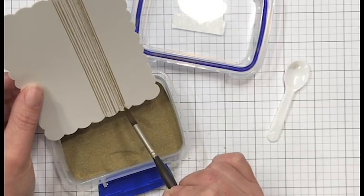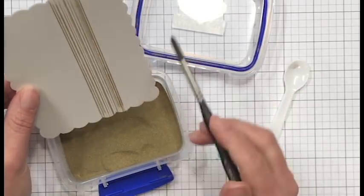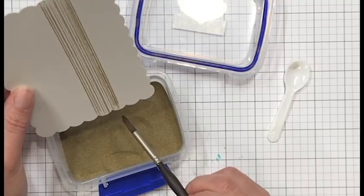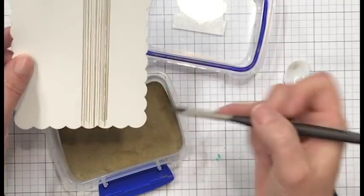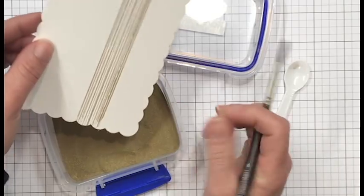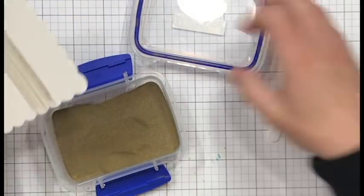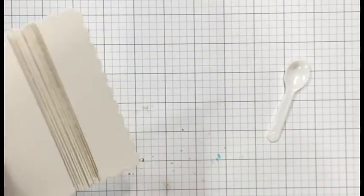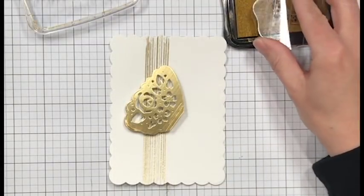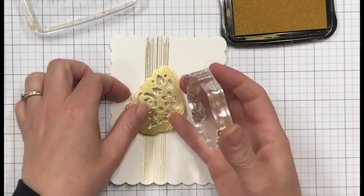I do have my heat gun heating up while I'm doing this because I want to make sure that it's nice and hot. I'm going to try to minimize as much warping as I possibly can because this panel isn't going to be popped up or anything. I'm not going to have any foam behind it to help keep it straight, so I want to minimize that warping as much as possible.